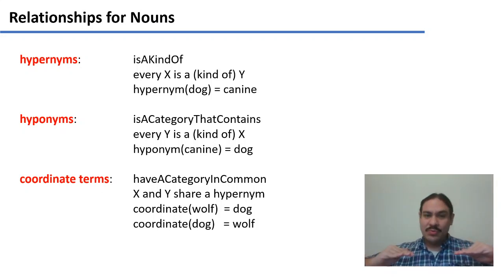So, both dog and wolf share a hypernym. They are a kind of something canine. Because of this, they both share a kind of something, a hypernym. These are called coordinate terms. So, wolf is the coordinate of dog. Dog is the coordinate of wolf.